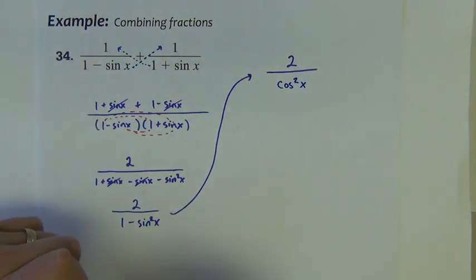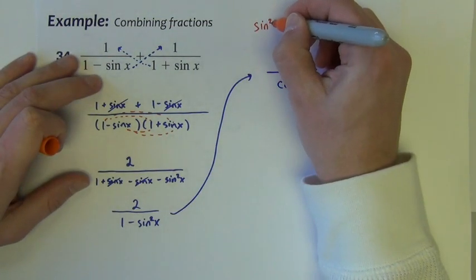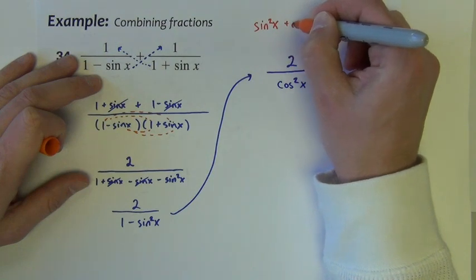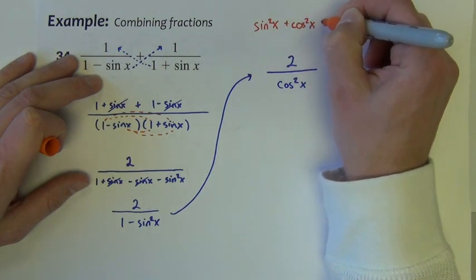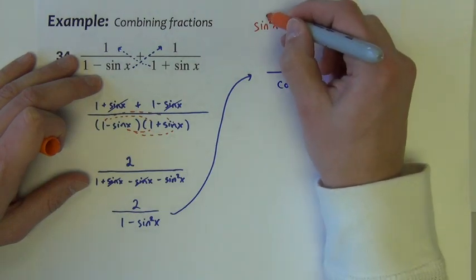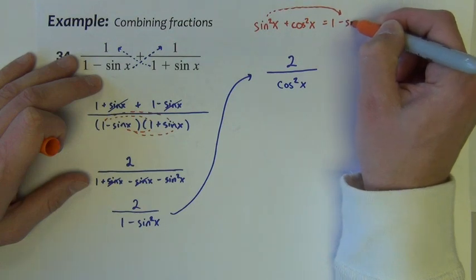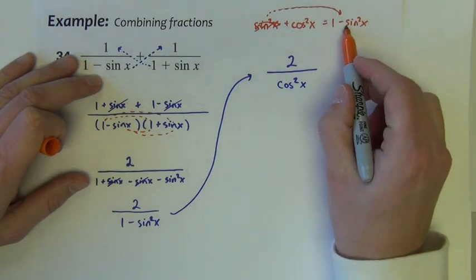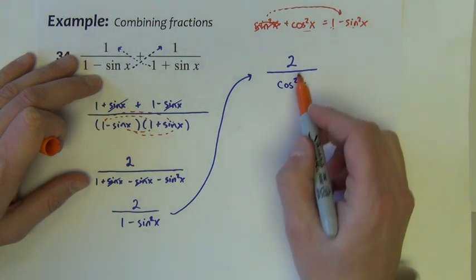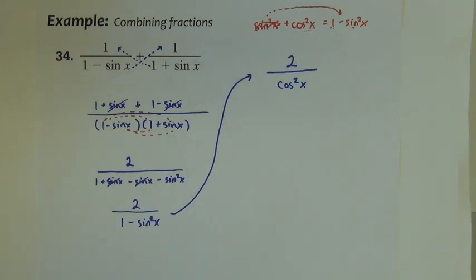All right, let me show that just so you believe me here. If I add my original sine squared plus cosine squared x equals 1. If I were to take this sine squared and subtract it over to this side, 1 minus sine squared would be cosine squared, so that's an okay substitution.